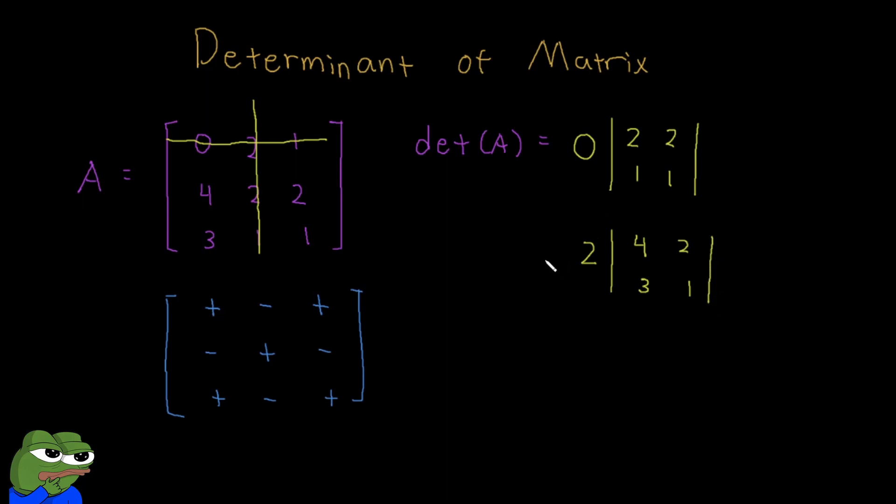Now, would this be a plus or a minus behind this? We saw our target element was 2, which is on this position. And if we refer to our checkerboard over here, it's minus, right? So we put a minus behind this 2.